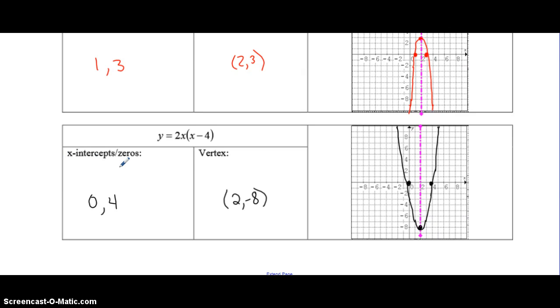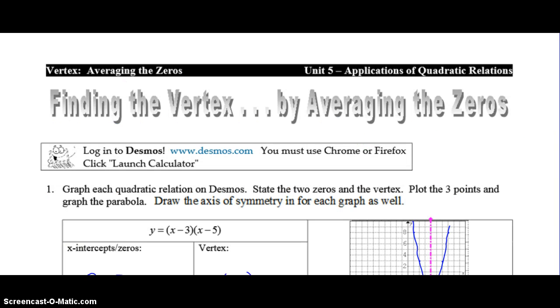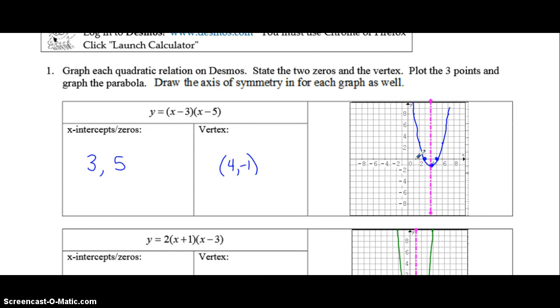So hopefully you noticed a bit of a pattern between the zeros and the x-coordinate of the vertex. Here the zeros are 0 and 4, the vertex x-coordinate is at 2. Here the zeros are at 1 and 3, the x-coordinate of the vertex is 2. So hopefully what you noticed was that the x-coordinate of the vertex is halfway between the zeros which is the average. The reason for this is because the graph is symmetrical. The zeros are equal distance away from that axis of symmetry making the x-coordinate of the vertex the in-between point or the average.